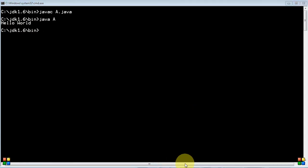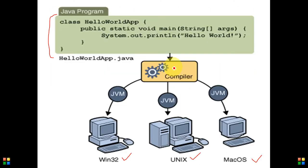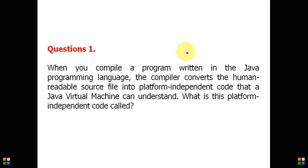Here is a small question. Question number one: When you compile a Java program, the compiler converts the human readable source file into a platform independent code that the Java virtual machine can understand. What is the platform independent code called? The answer is: the platform independent code is called bytecode.